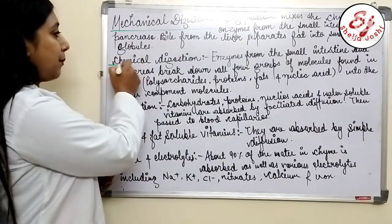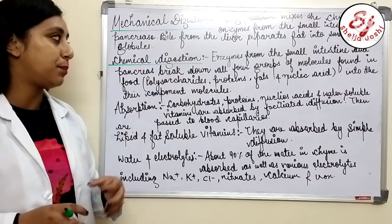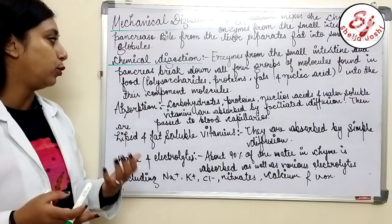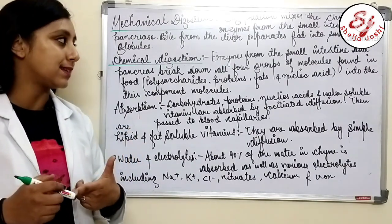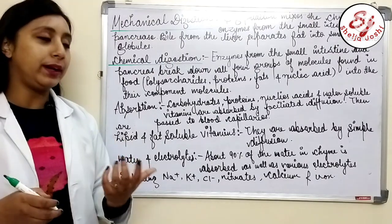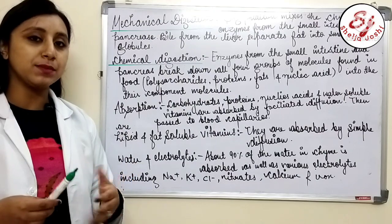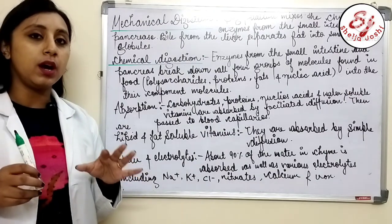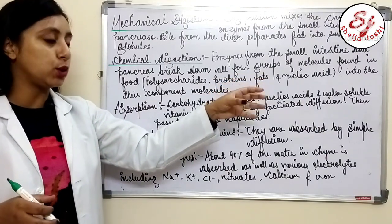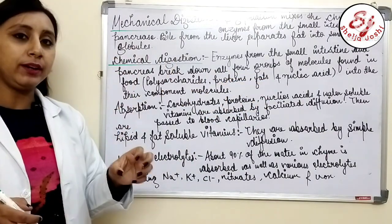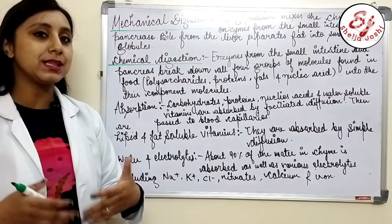In chemical digestion, enzymes from the small intestine and pancreas break down groups of molecules found in food — such as polysaccharides, proteins, fats, and nucleic acids — into their component molecules. These molecules are then mixed into the blood.